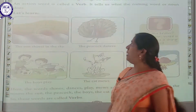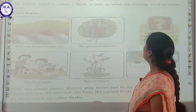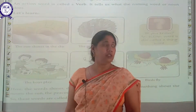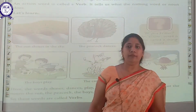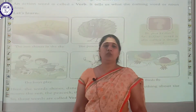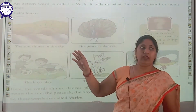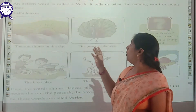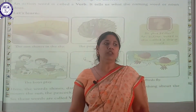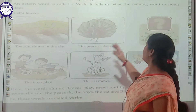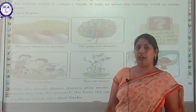Students, people, animals or other living beings do different works or actions. Those living beings — people or animals — can do some actions or some works. An action word is called a verb.